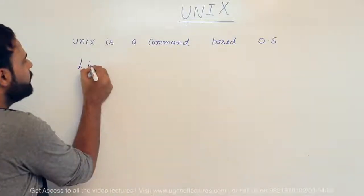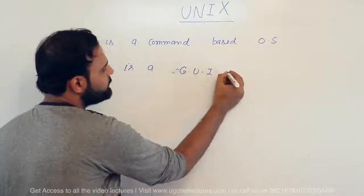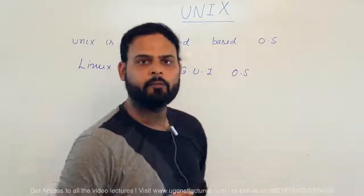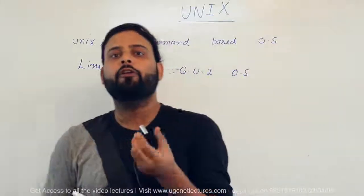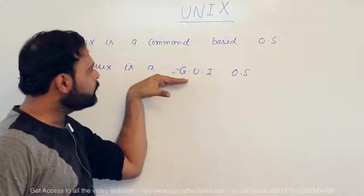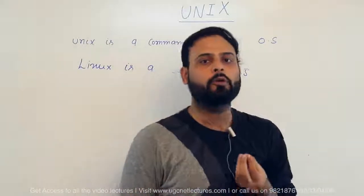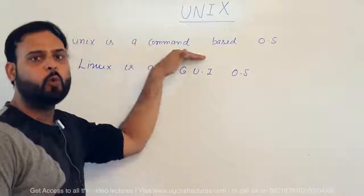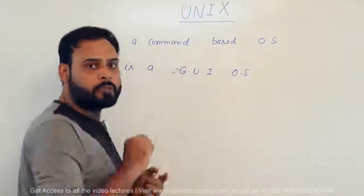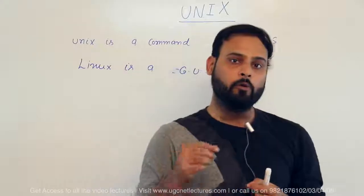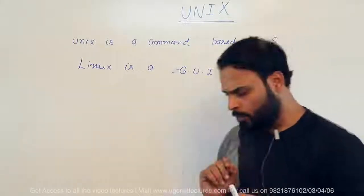If you look at Linux, Linux is a graphical user interface operating system. For example, suppose you want to play music or a video file — in a GUI OS you can use a mouse or keyboard to play music. But in a command-based OS like UNIX, you have to use a command to play music. This is the difference between a command-based and a graphical user interface operating system.